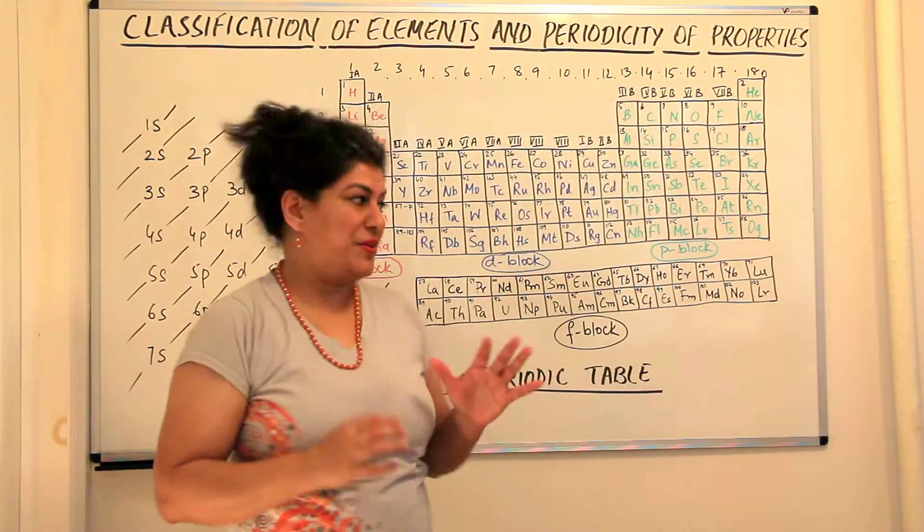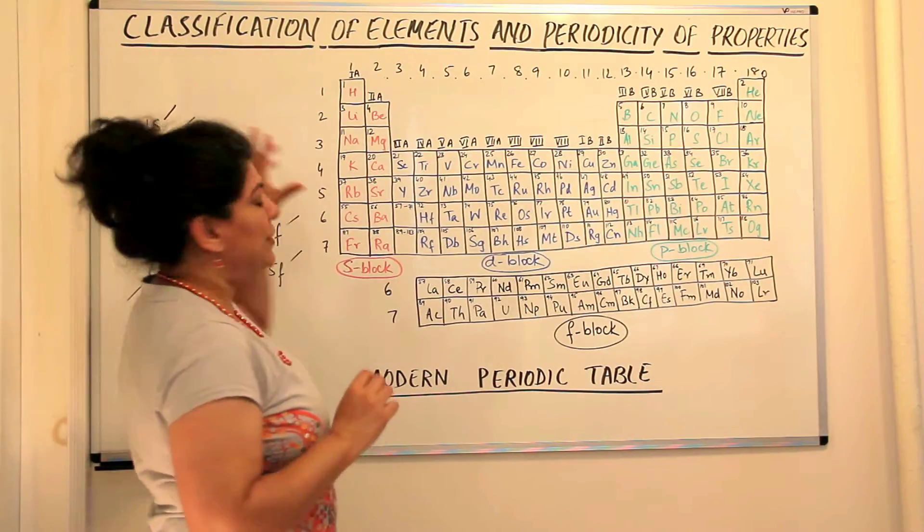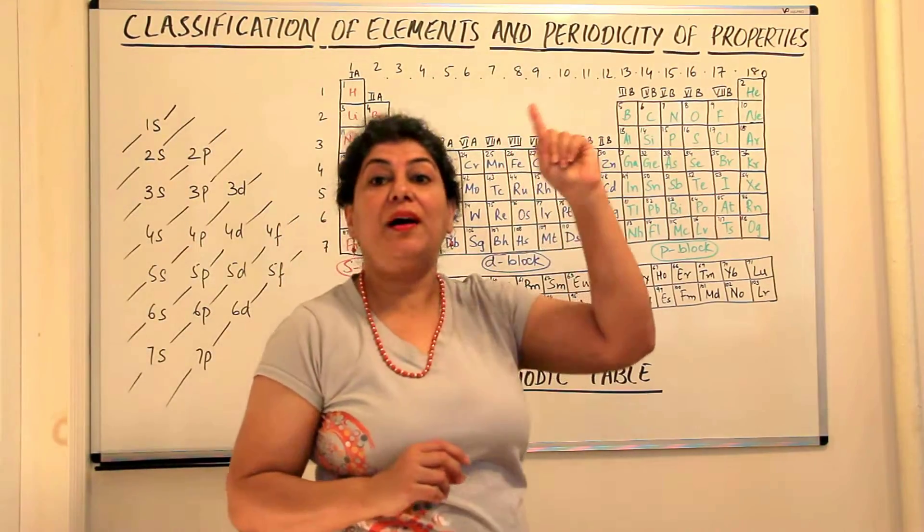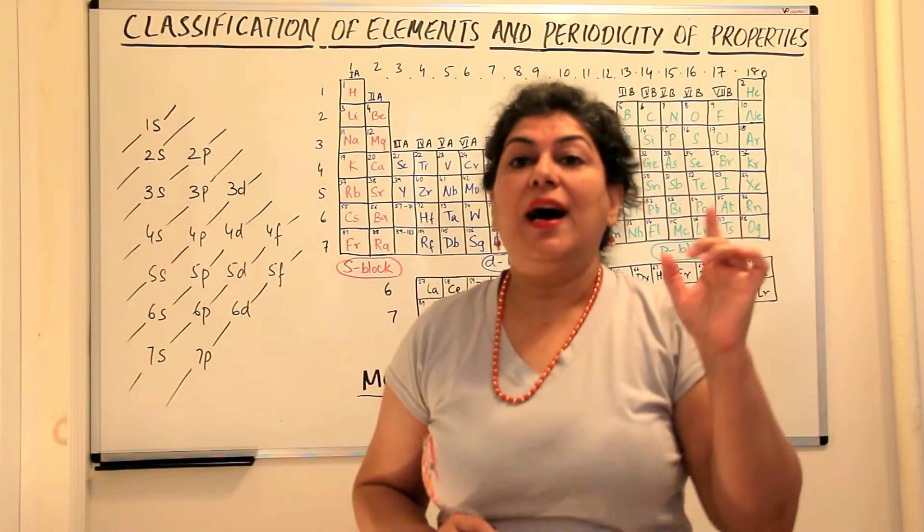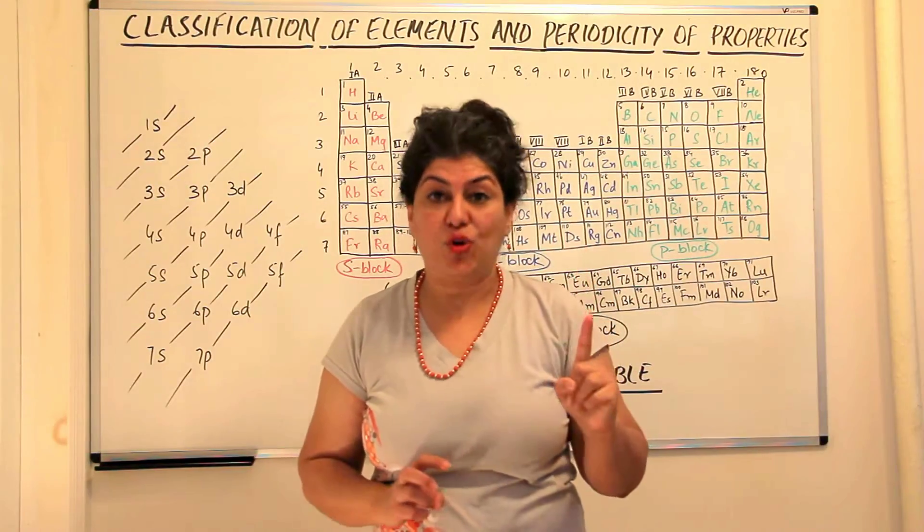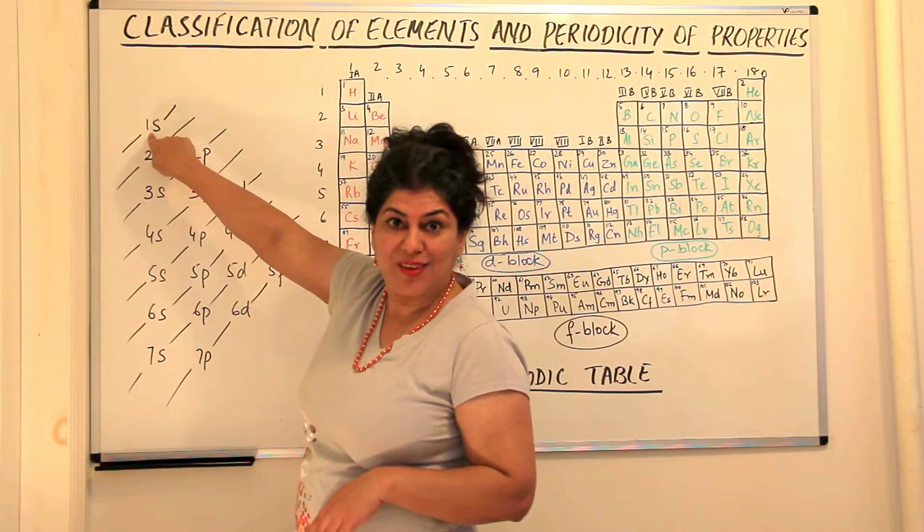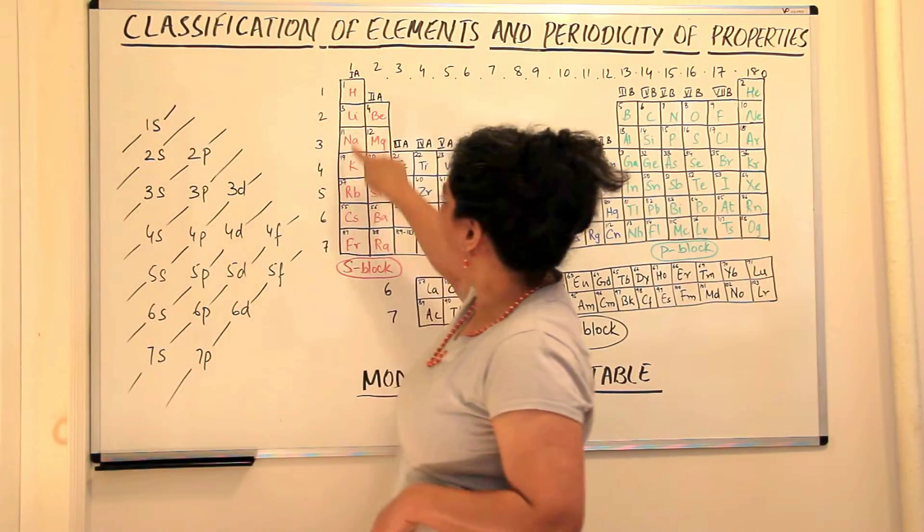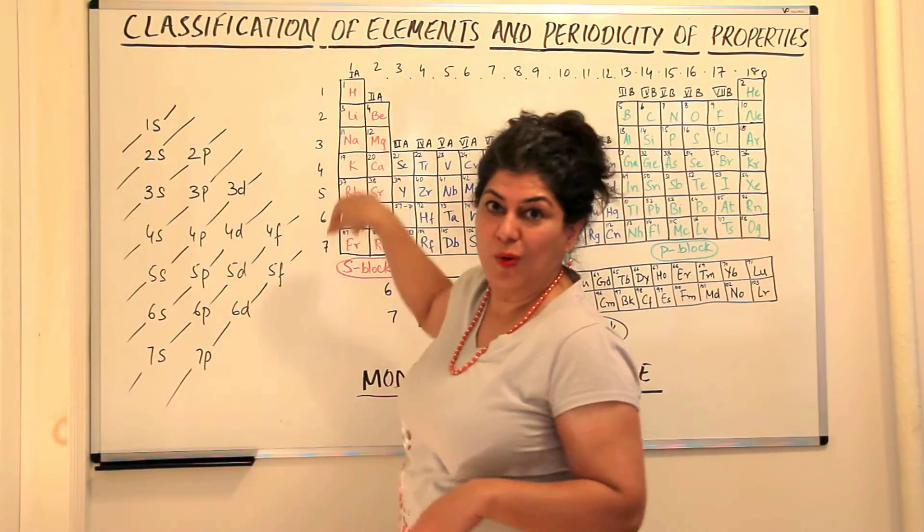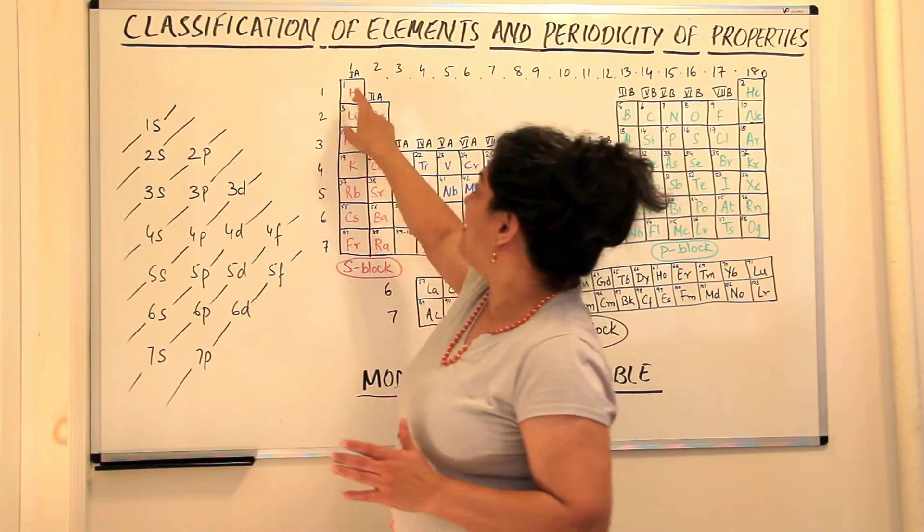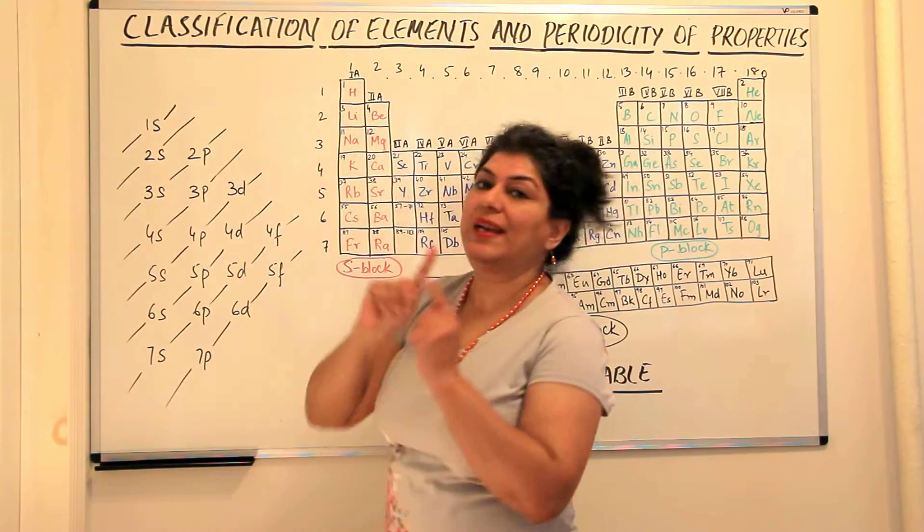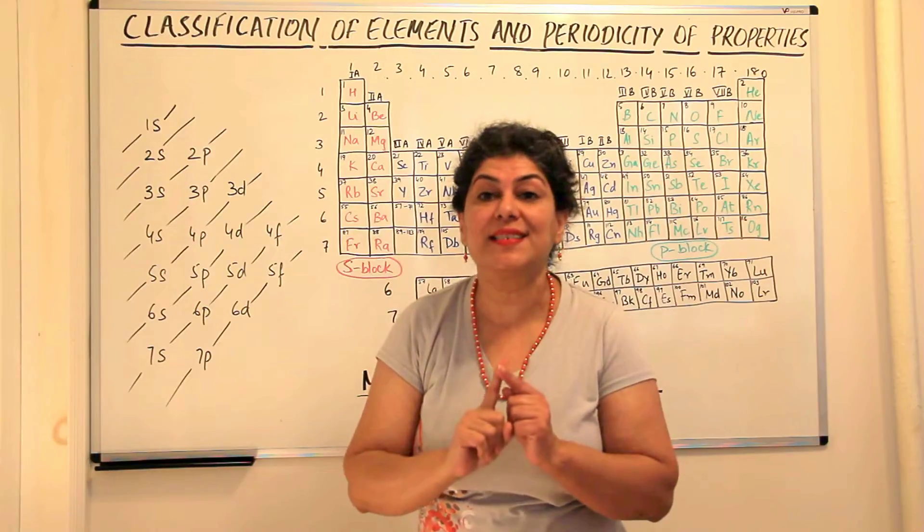Here when we start with the first element, atomic number one, is hydrogen. Hydrogen has only one electron. If it has only one electron, that one electron goes to one s orbital.